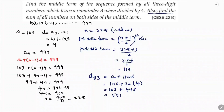The second part asks to find the sum of all numbers on both sides of the middle term. The middle term is the 113th term, so we need the sum of all terms before the 113th term and the sum of all terms after the 113th term.